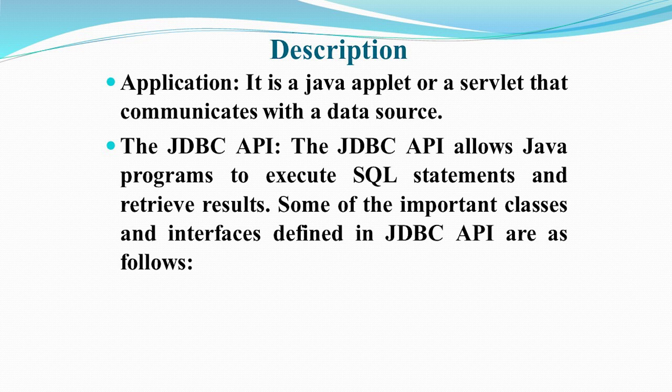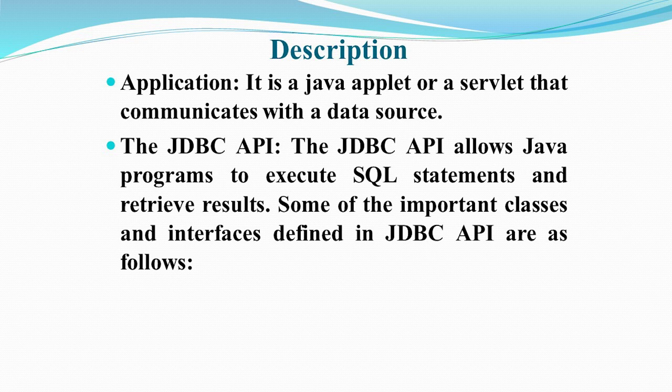The application is a Java applet or servlet that communicates with the data source. If we have a data source from which data is coming or where we need to save data, the Java applet or servlet will communicate with that data source. The JDBC API allows Java programs to execute SQL statements and retrieve results. Some important classes and interfaces are defined within the JDBC API.